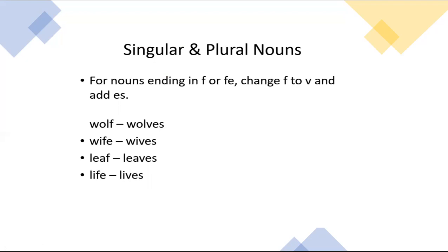For nouns ending in F or FE, change the F to V and add ES. For example, the word 'wolf' ends in F, so we convert that F into V and add ES — giving 'wolves.' The same goes with 'wife,' 'leaf,' and 'life': change the F to V, then add ES.